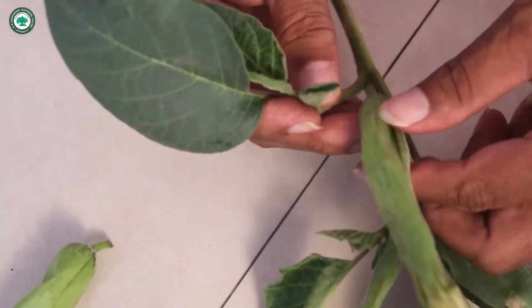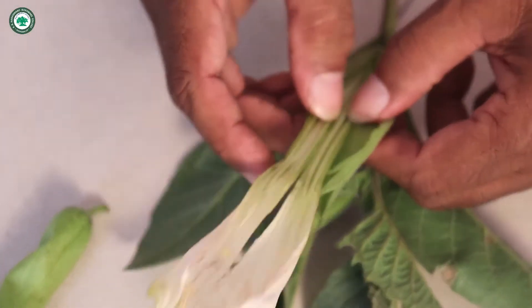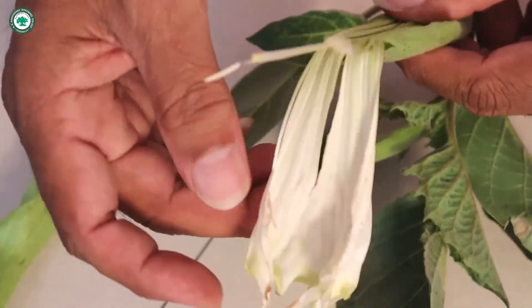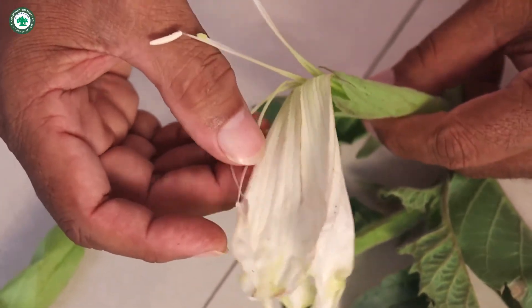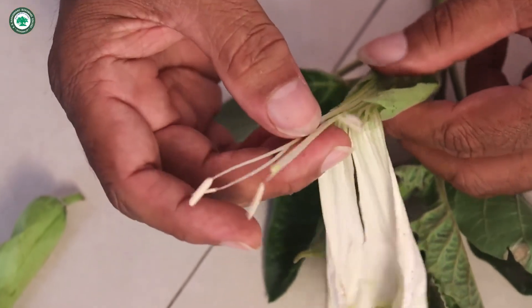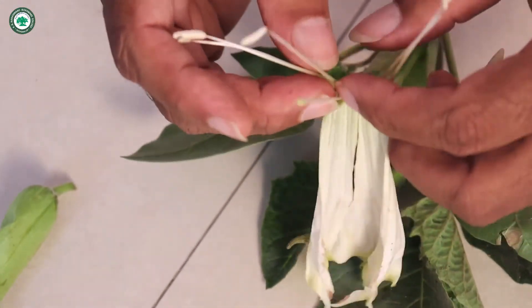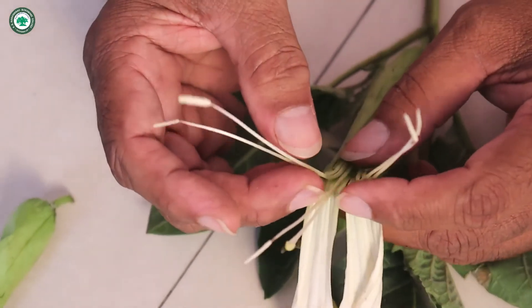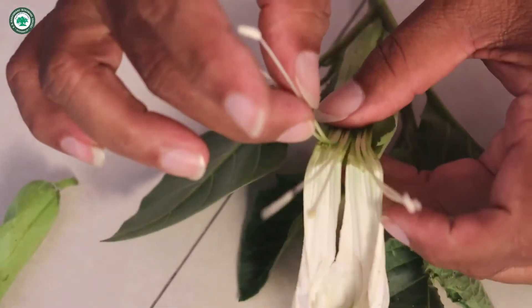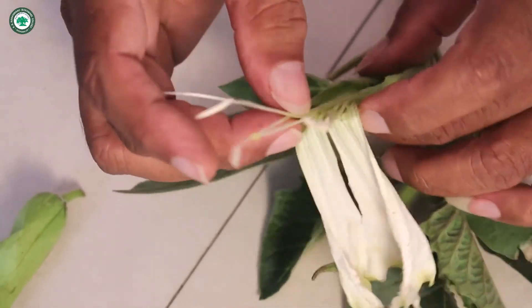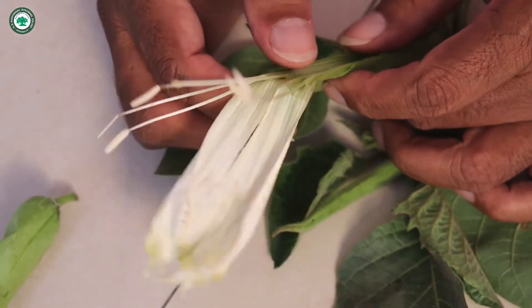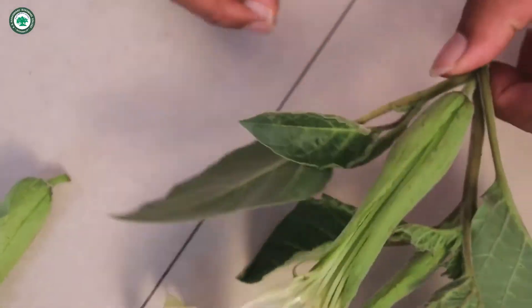Now androecium. So these are the androecium. Stamens are five in number. So these are the five stamens. They are five in number. They are very long. They are epipetalous. That means they are get attached to the petal. They are dithecous and they are introrse. Now the gynoecium.